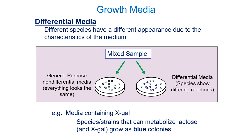To recap: complex media contains a complex mixture of compounds allowing several different species to survive and grow. Synthetic or chemically defined media contains the bare essentials for a particular species. Selective media selects against certain microbes — it may contain toxins killing everything except the species you want to study. The fourth category is differential media, which allows several different species to survive and grow but they will look different on the plate — useful for identifying different species or genetic strains with different characteristics.